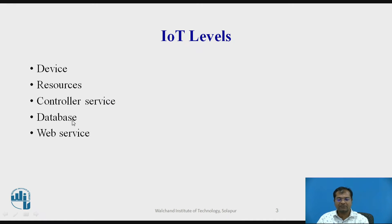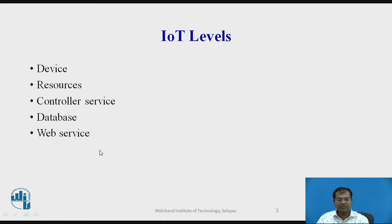Next comes the database. The database stores the data, manages the data, and performs operations on the data. The data generated by IoT devices is kept on the cloud, and the database manages data collected by different IoT devices. Next comes web services, where the device and the database are connected through web servers, and further analysis will be done on the data.